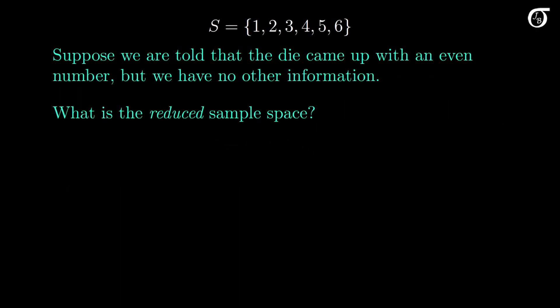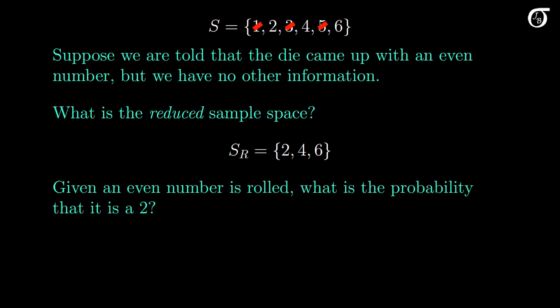Here's a slightly different scenario. Suppose we are told that the die came up with an even number, but we have no other information. What is the reduced sample space? We know that the number is even, so 1, 3, and 5 can't have occurred. The reduced sample space is now the even numbers. Suppose we were asked: given an even number is rolled, what is the probability it is a 2? Here we are looking for a conditional probability — the probability that we rolled a 2 if we know the number is even.